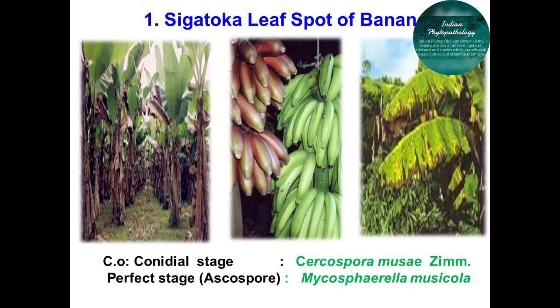Primary infection of Sigatoka disease is always by means of spores from dried infected leaves lying in the field, which contain the perfect stage of the fungus Mycosphaerella musicola. Those spores are known as ascospores, which cause primary infection in the plantation. Secondary infection is always by means of airborne or rain-borne conidia, which migrate from infected to healthy portions.